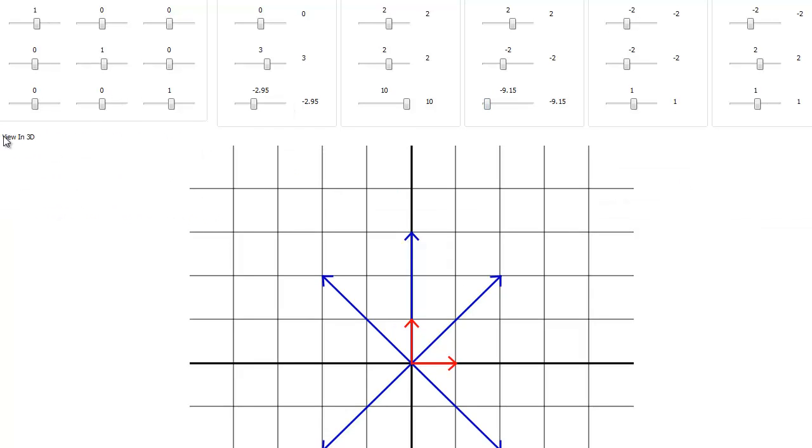But when we view in 2D, remember this graph, all my program does in this graph is it graphs the X and the Y coordinate. It doesn't graph the Z. There's no way I can graph the Z coordinate in two dimensions. This goes back to that term I keep throwing out, homogeneous coordinates.